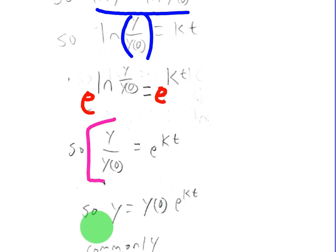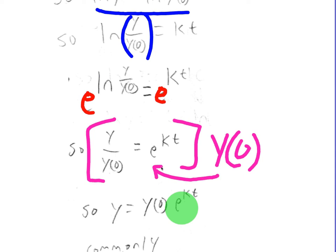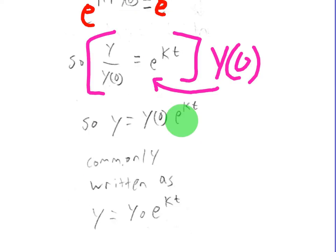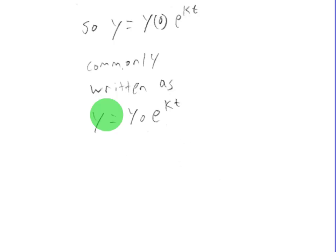Finally, what we will do is multiply both sides by y of 0, and we get y is equal to y naught times e to the kt. So basically, you can just move the y naught to the front there. Commonly written as y equals y naught times e to the kt. So I'm going to write this bigger so all of you can see it.